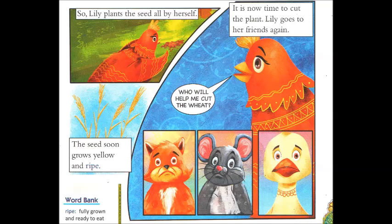इसके बाद Lily खुद से बीच को बो देती है। कुछ दिनों में बीच गेहूं का पौदा बन गया और उसमें पीले पीले गेहूं के दाने लग गए। यह देखकर Lily ने सोचा कि गेहूं पक चुके हैं, अब इसे काटना चाहिए। फिर से Lily अपने दोस्तों के पास जाती है और पूछती है: गेहूं काटने में मेरी मदद कौन करेगा?